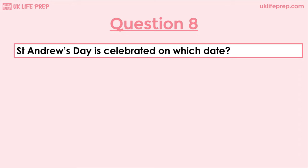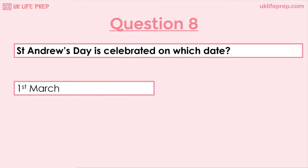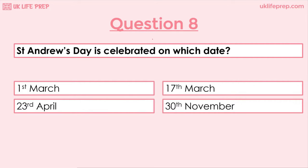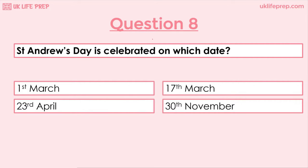Question 8: St Andrew's Day is celebrated on which date? The 1st of March, the 17th of March, the 23rd of April or the 30th of November? The correct answer is the 30th of November. The 1st of March is St David's Day, the 17th of March is St Patrick's Day and the 23rd of April is St George's Day. It's really important to know these dates as they are often assessed in the test.